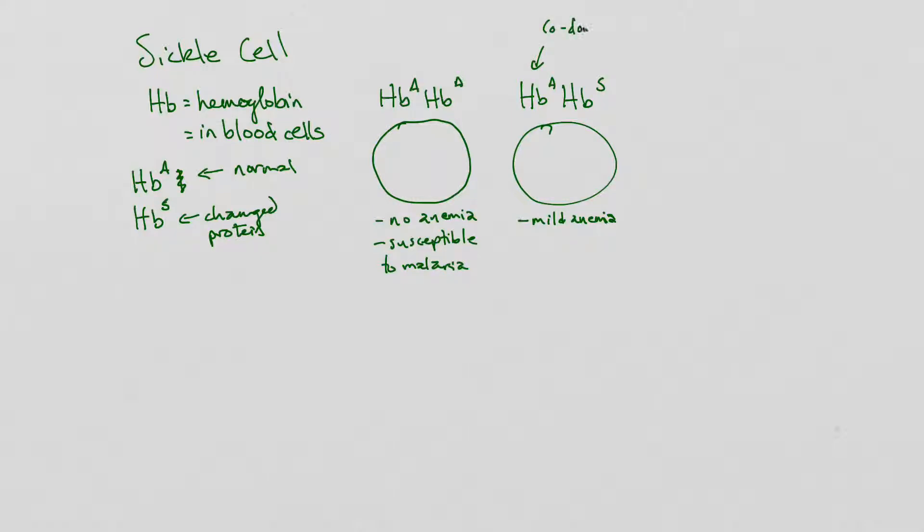Codominance means that these are both dominant alleles, so they're both represented. Luckily, there's enough of the normal protein that it's not a huge issue. And, these people have a better resistance to malaria.